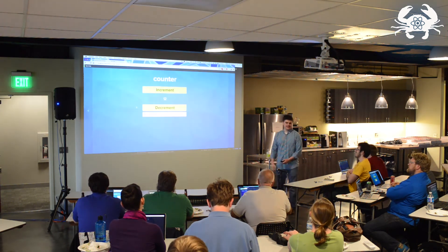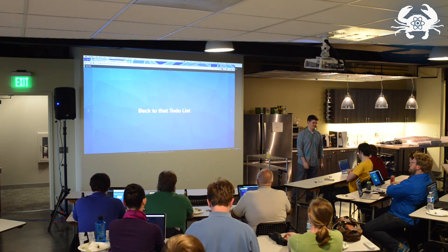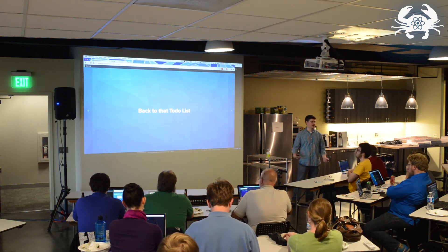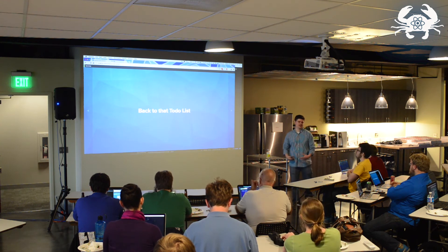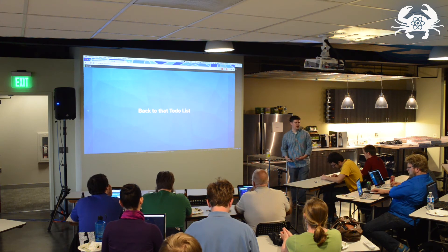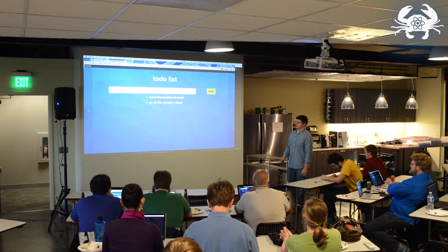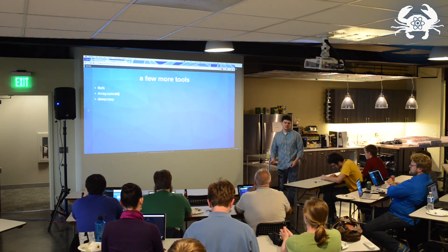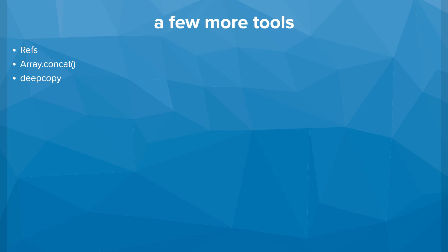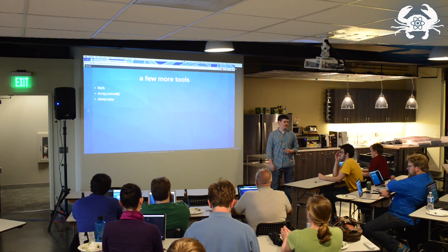The to-do list is a great way to show a lot of these examples, but it's a little bit tough to have everybody build. So we'll just walk through the last couple things you need to know together. Back to our to-do list, there are a few more things. One that is more of a convenience than anything else is refs. Then array.concat and deep copy are going to allow us to update our nested state in a way that won't violate the immutability constraint.